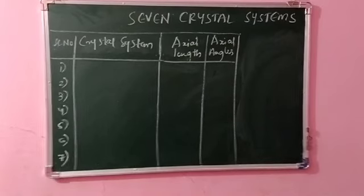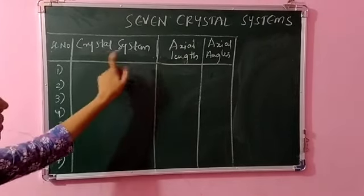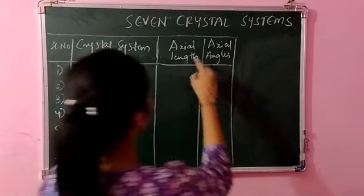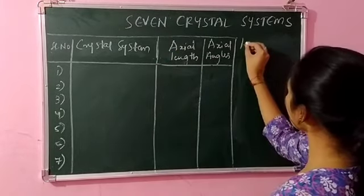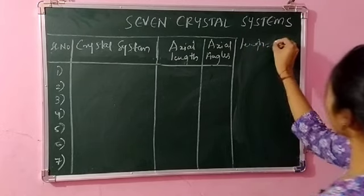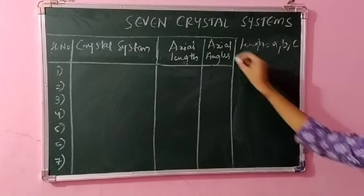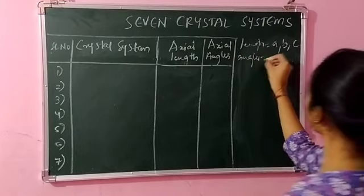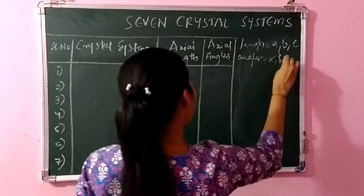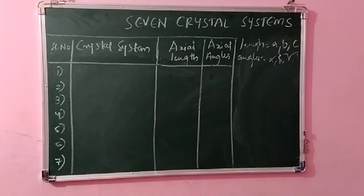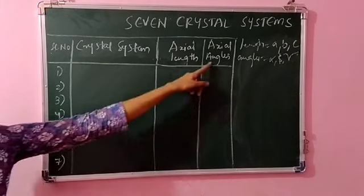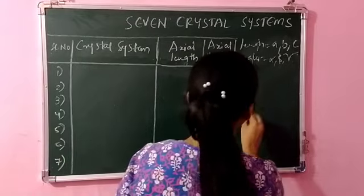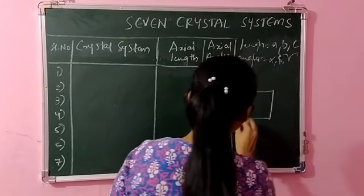Before going to the crystal systems, we will study what are axial lengths and axial angles. Axial lengths are represented by a, b, and c, and axial angles are represented by alpha, beta, and gamma. So a, b, c are your axial lengths and alpha, beta, gamma are axial angles. Let me show you that in one cubic structure.